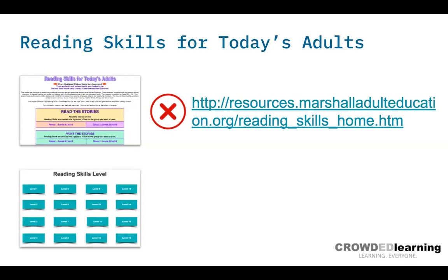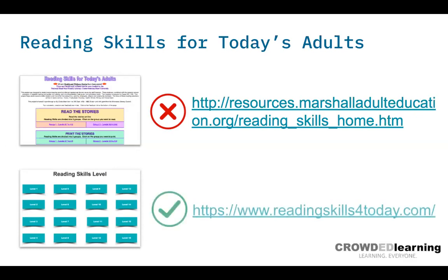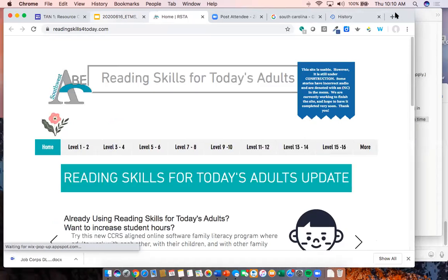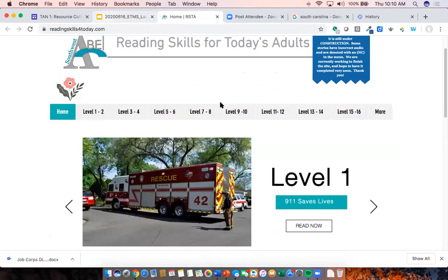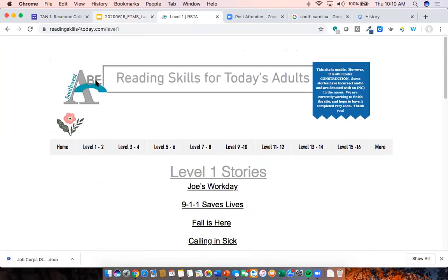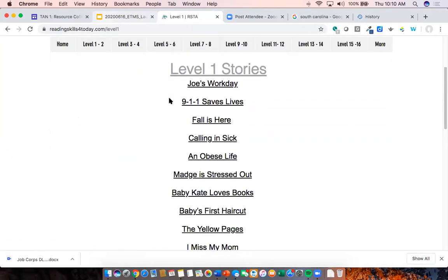If you Google 'Reading Skills for Today's Adults,' pay attention — the correct URL is readingskillsfor4today.com, which has the updated readings with all the various resources. This is a resource educators are using very widely. As part of my work at Crowded Learning, we're often polling teachers on what free resources they use — Khan Academy is always number one, but Reading Skills for Today's Adults is one of the more popular tools we hear about.